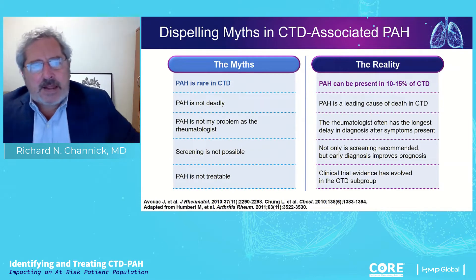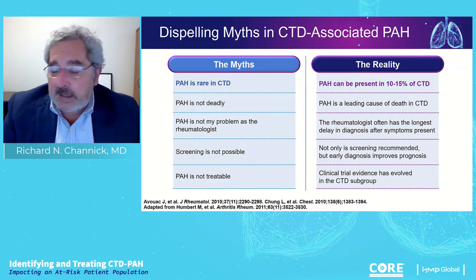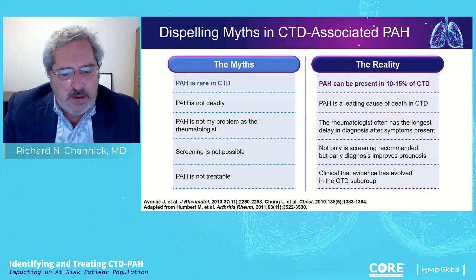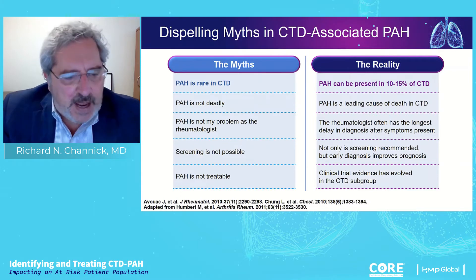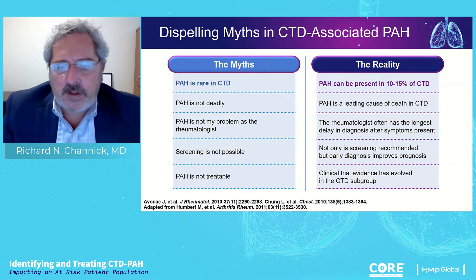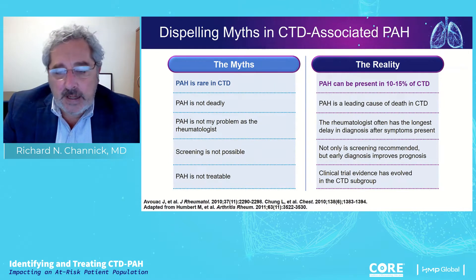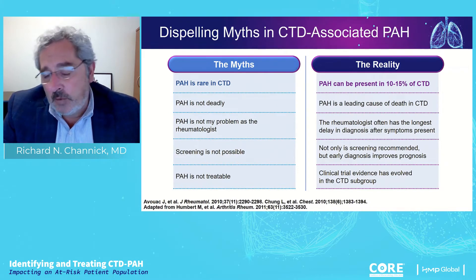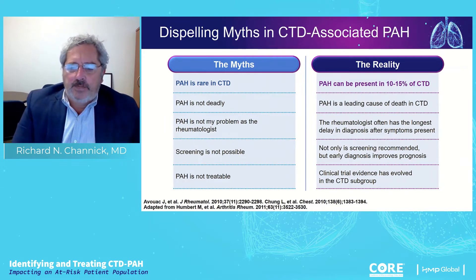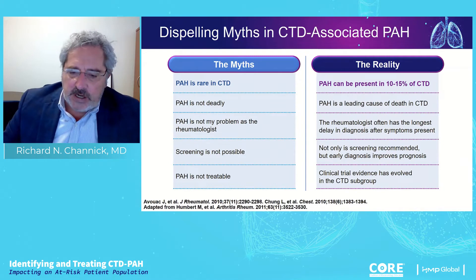I like to talk about the myths of connective tissue disease associated with PAH. Those include that it's a rare thing, it almost never happens, that it's no big deal or not deadly, that the rheumatologist can just send the patient away, that we really can't screen for it, and that it's not particularly treatable. Those are all myths. PAH is actually quite common in patients with some connective tissue diseases, it's a severe prognostic marker, and the rheumatologist who sees these patients can make this diagnosis or at least screen for it. There are screening tools, and we have many effective treatments available.